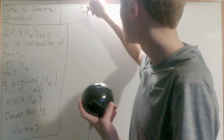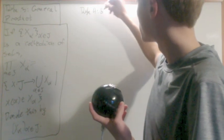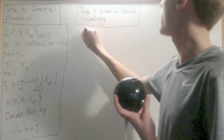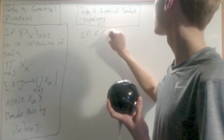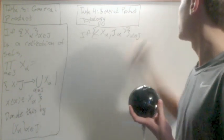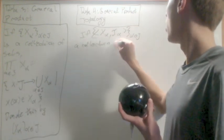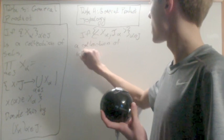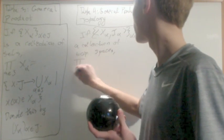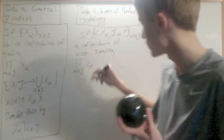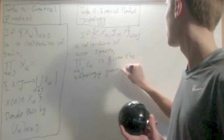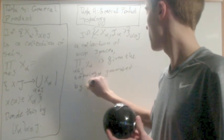Definition 4 is going to be general product topology. So if (x alpha, t alpha) for alpha in J is a collection of topological spaces, the product for alpha in J of x alpha is given the topology generated by the basis.